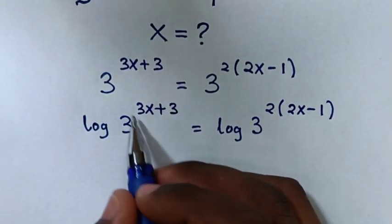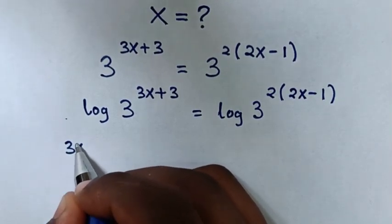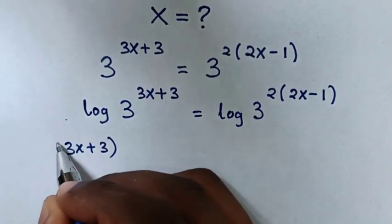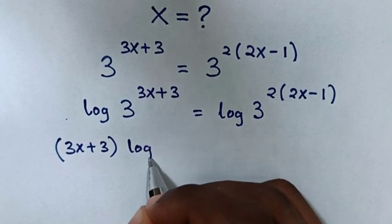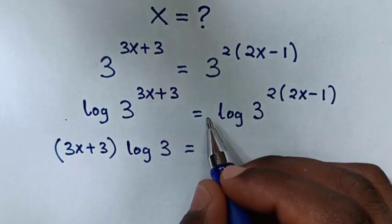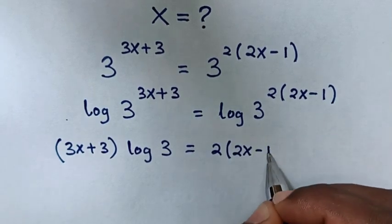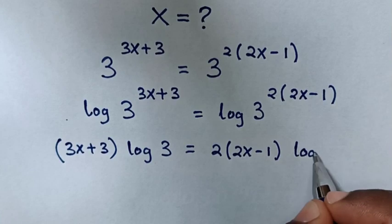In the next step, these powers will move to the base. So it will be 3x plus 3 bracket log of 3 is equal to... these powers will move to the base. So it will be 2 bracket 2x minus 1 bracket log of 3.